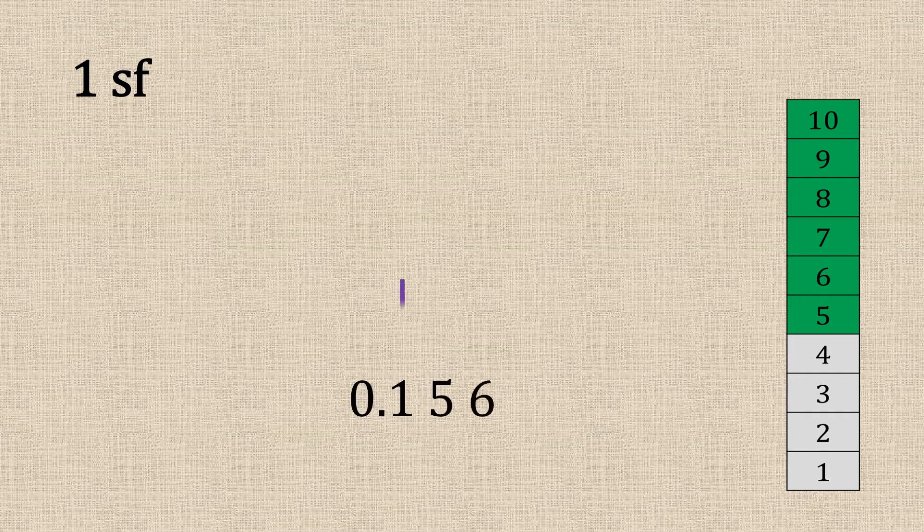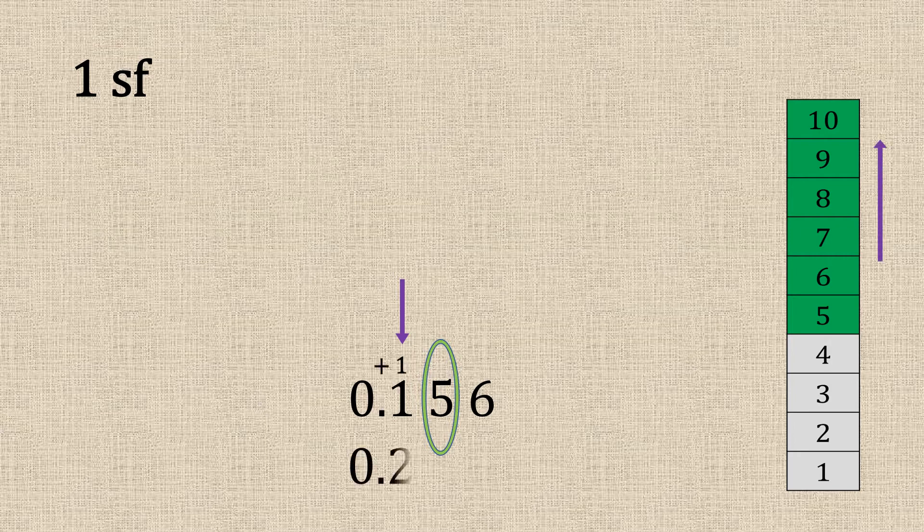Let's have a look. 0.156. One is our significant figure. Five is high. We add one and we round that to 0.2.